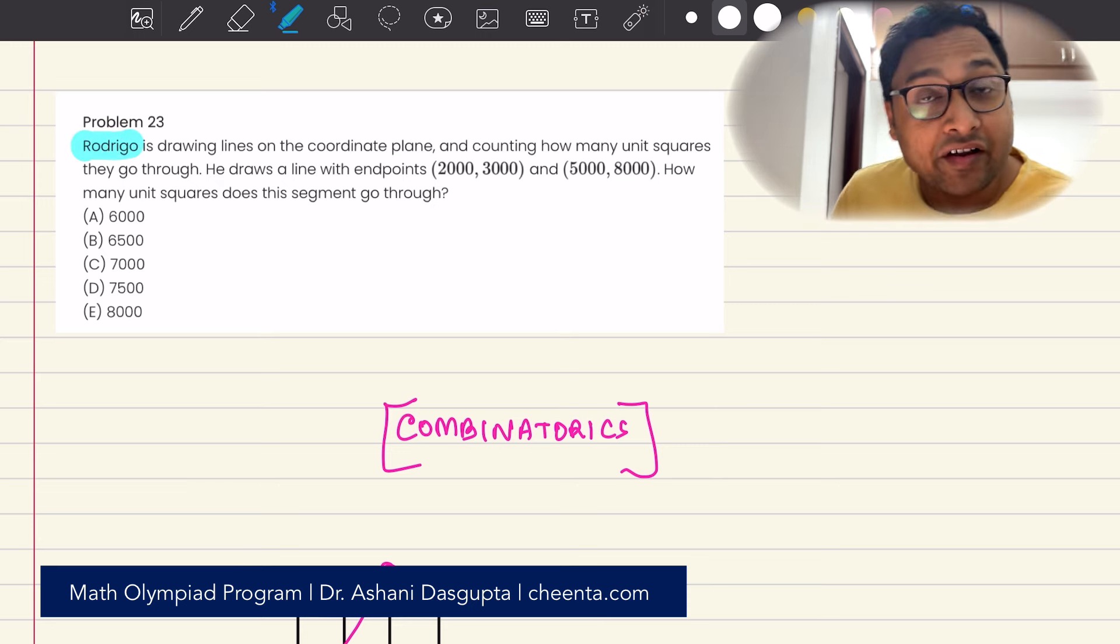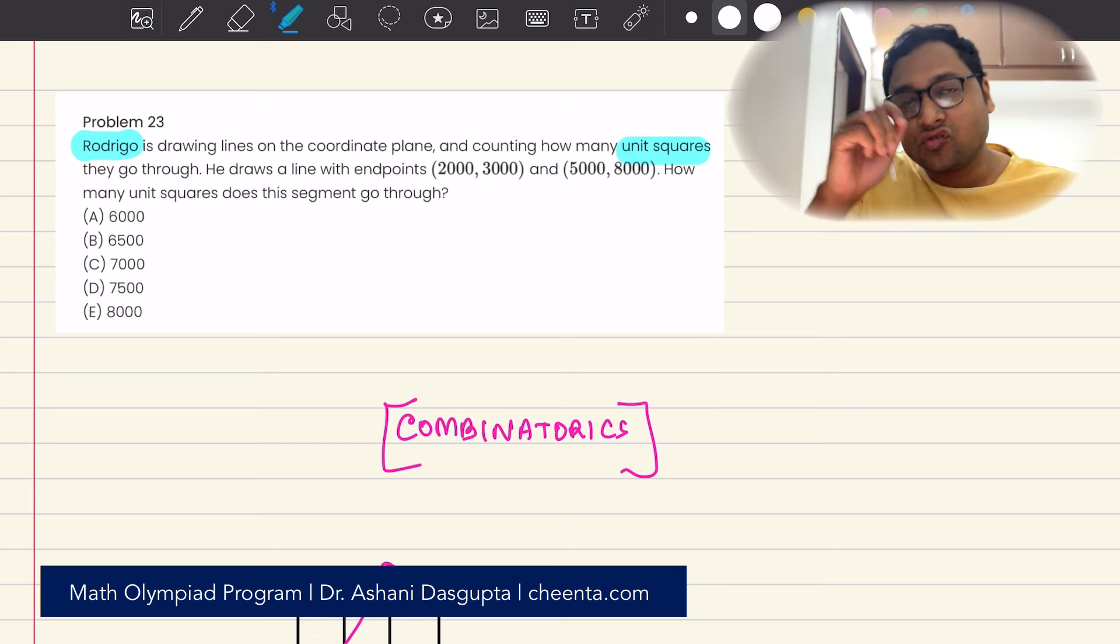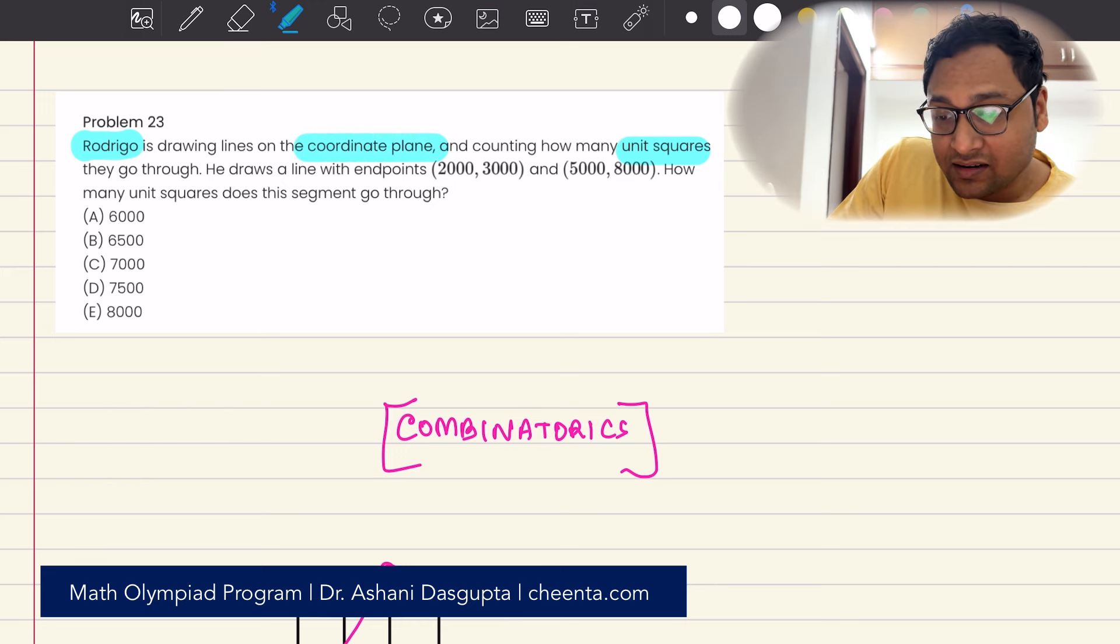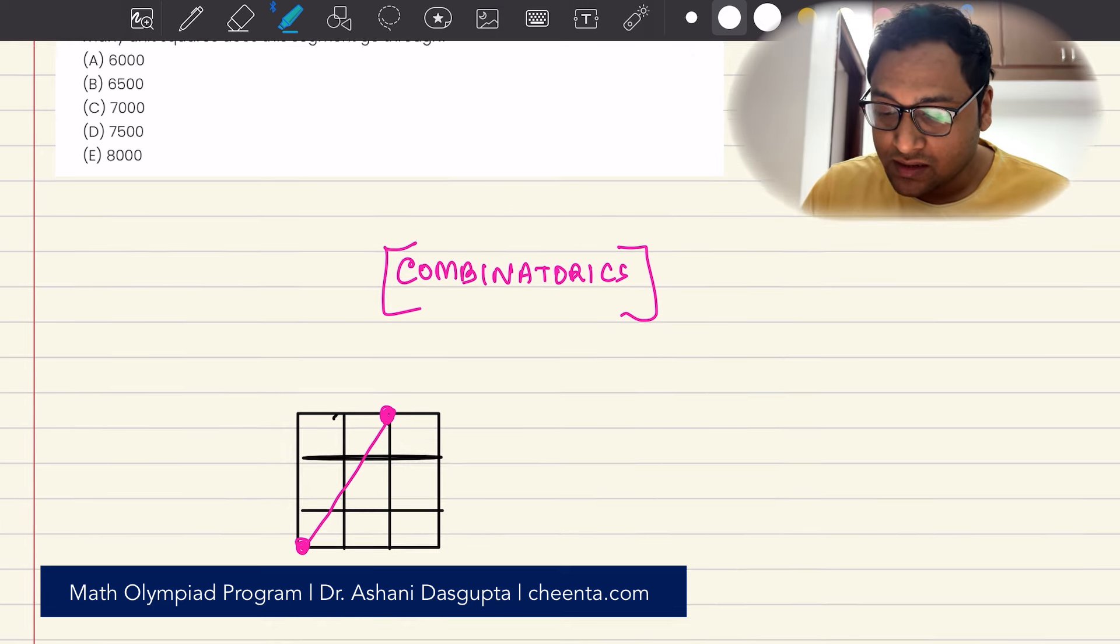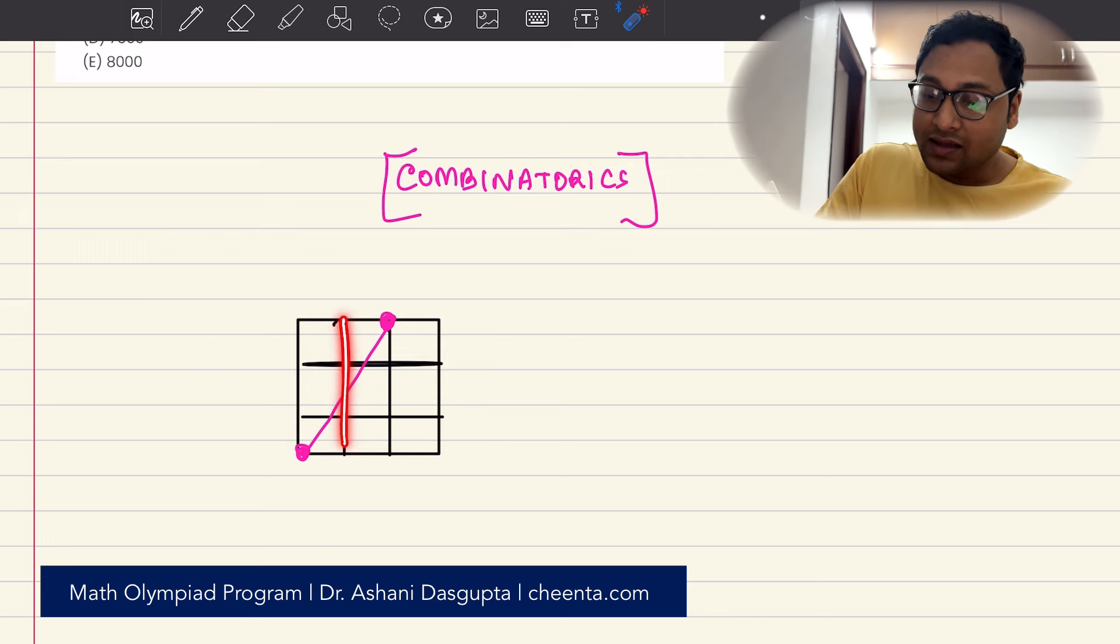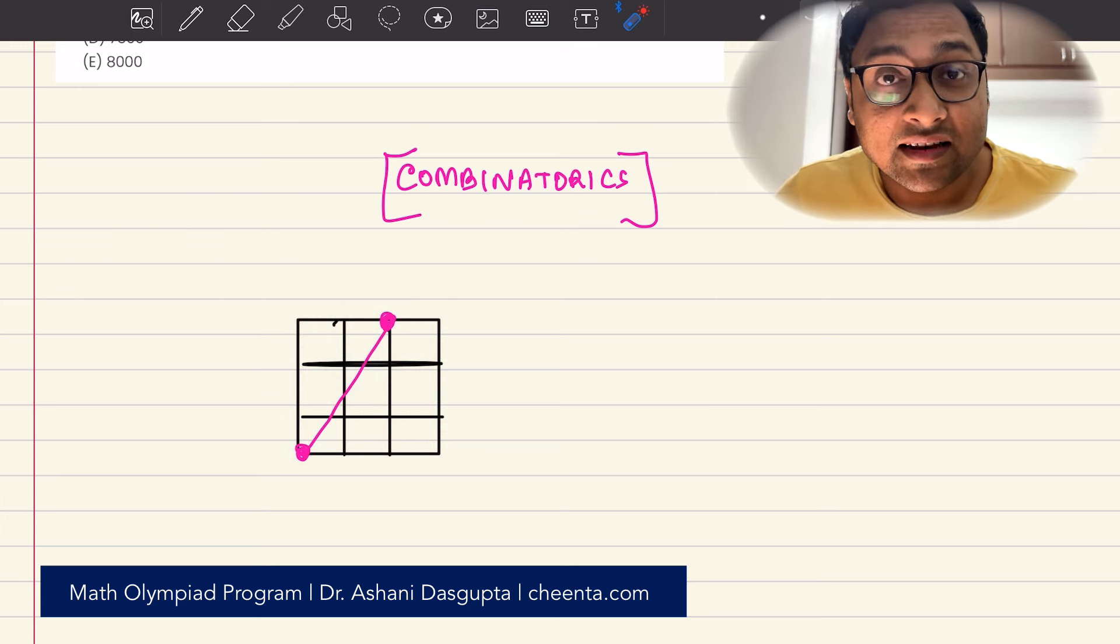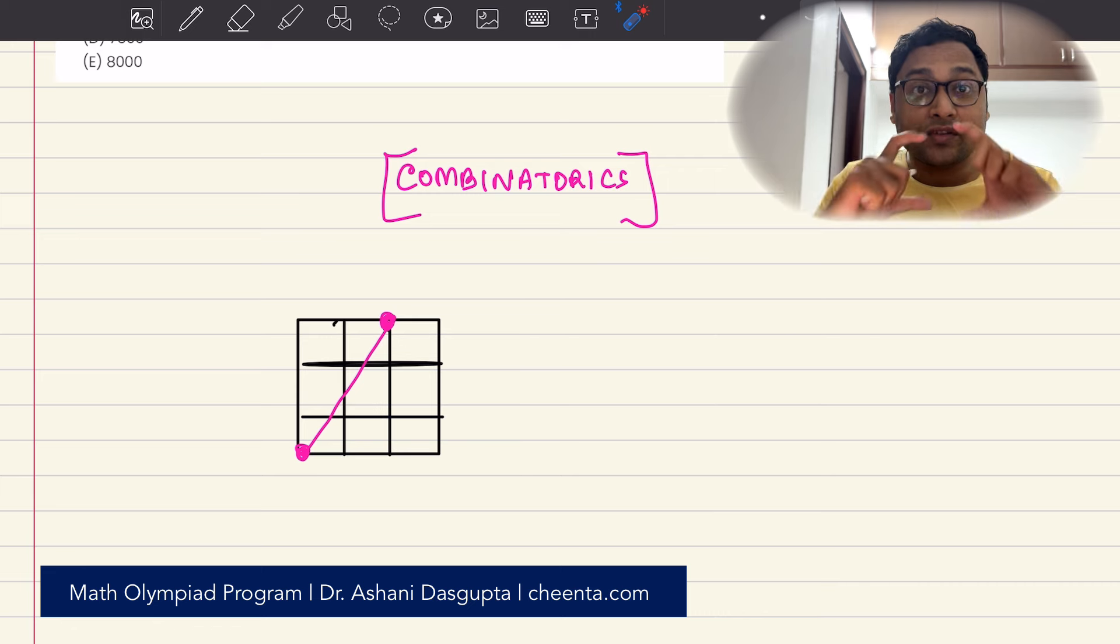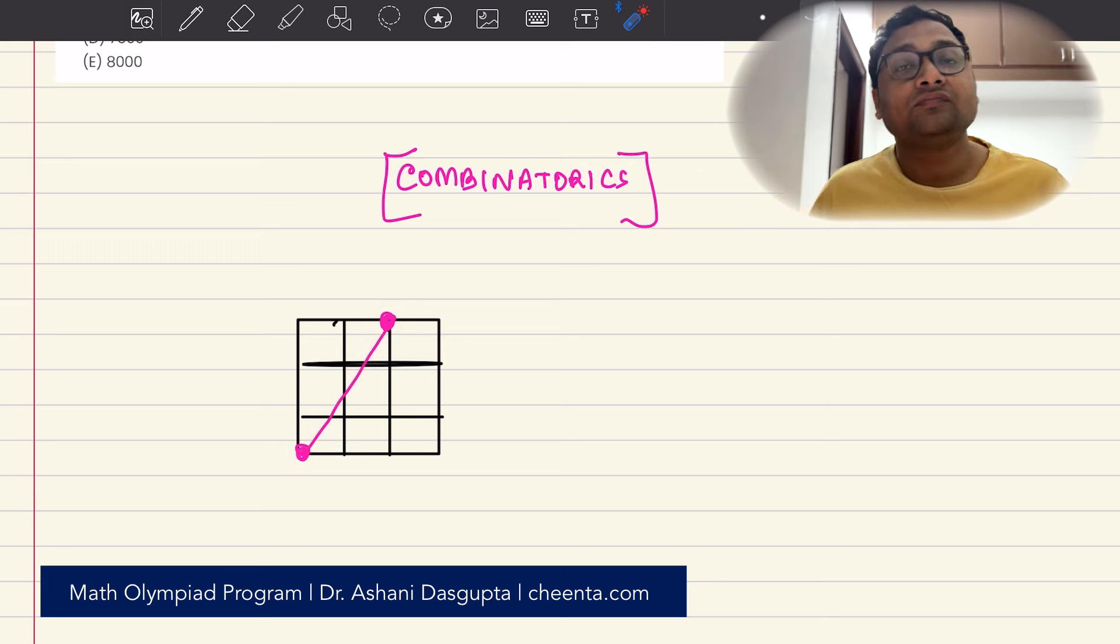We have a person called Rodrigo who is counting squares. He's drawing lines on the coordinate plane and then counting how many squares those lines pass through. I'll give you an example. Let's suppose this is the coordinate plane. You can think of it as a grid. It has a bunch of horizontal lines and a bunch of vertical lines and it's broken up with small unit squares. Suppose Rodrigo has drawn a line segment connecting these two points.